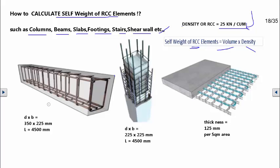Here we are seeing a beam, a column, and a slab. These are all RCC beam, RCC column, and RCC slab. Let us have a dimension: the beam depth by width is 350 by 225 mm with a length of 4500 mm; the column depth by width is 225 by 225 with a length of 4500 mm; and the slab is 1 meter by 1 meter with a depth of 125 mm.